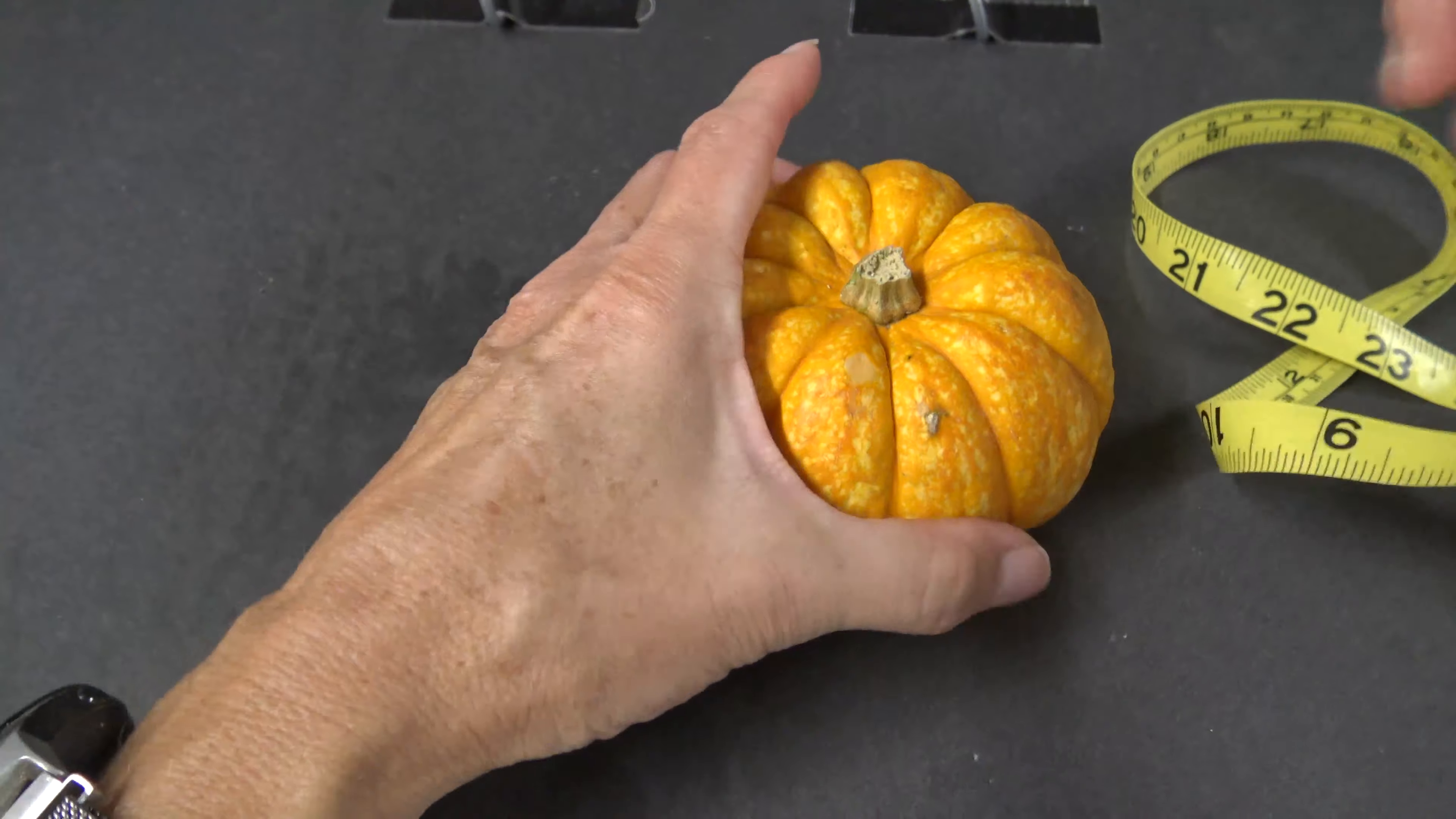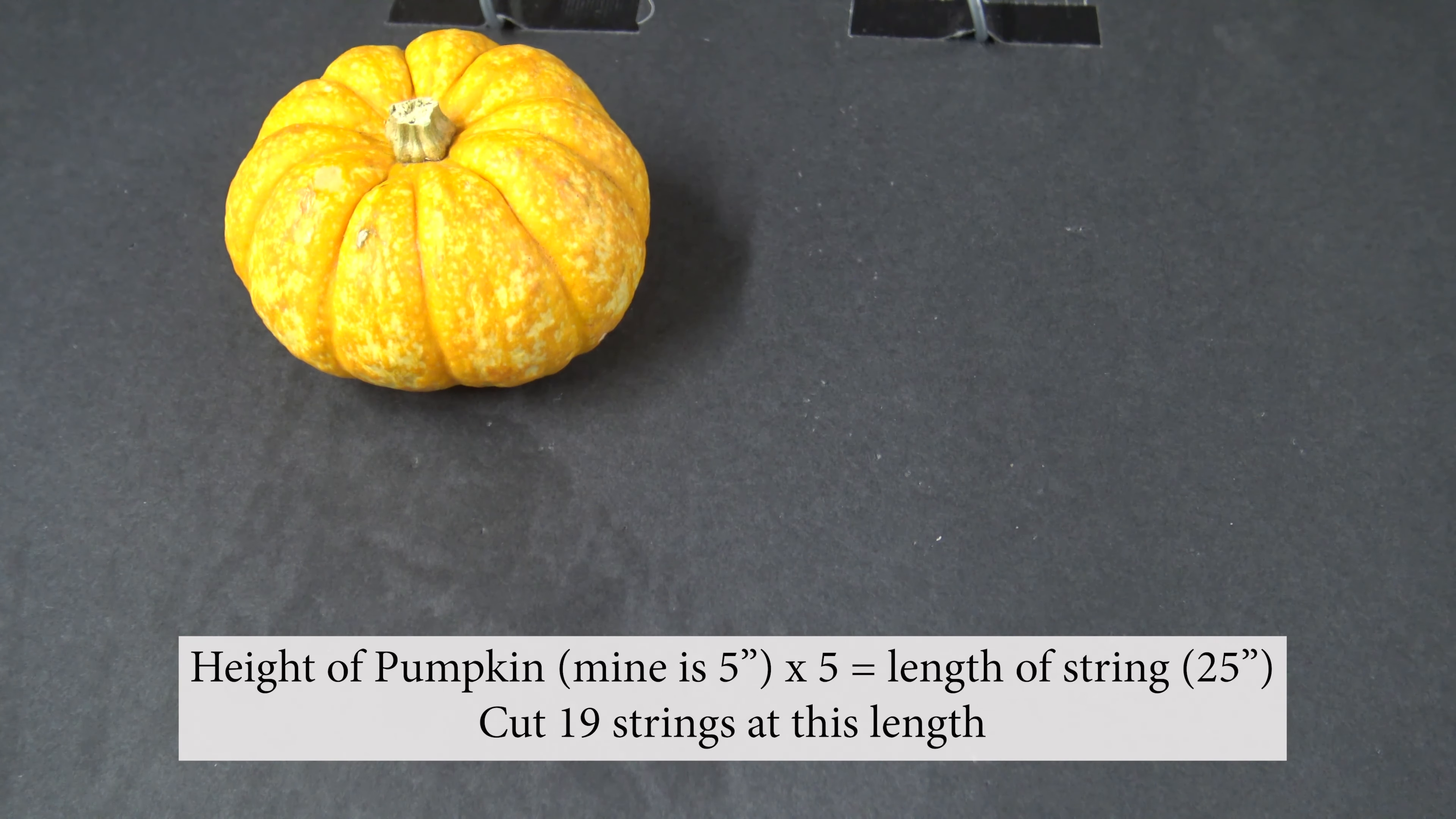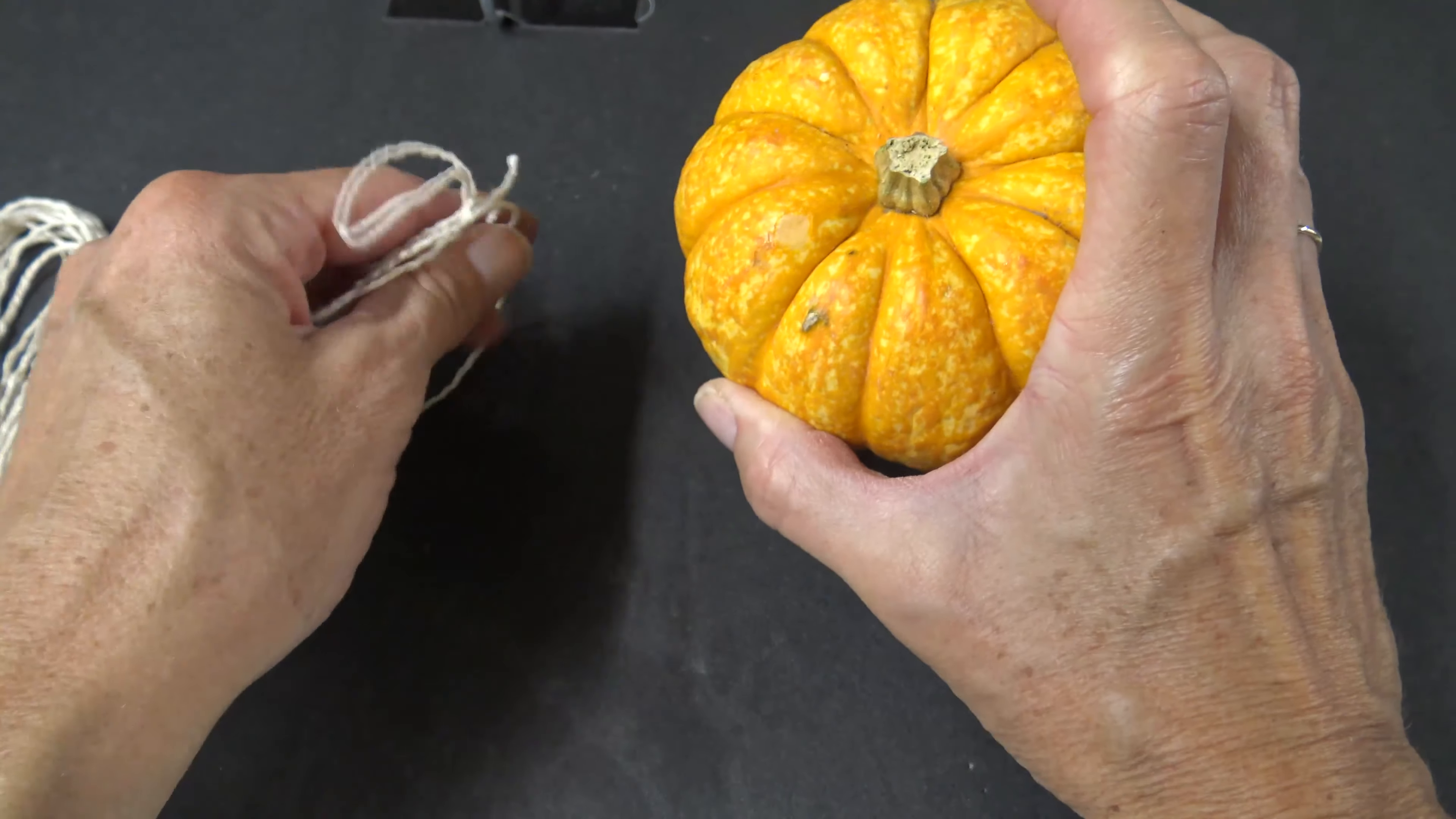To get started, take your pumpkin and measure from the center of one side to the center of the other side, and this is five inches. So you take that amount and take that times five, and that'll give you 25 inches for this pumpkin. Yours might be different, but for this one it's 25 inches. We need to cut 19 pieces of twine 25 inches long. We'll need to cut one piece of twine that same distance plus five, so one piece that's 30 inches.